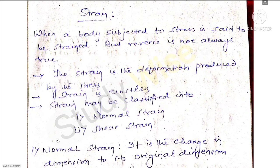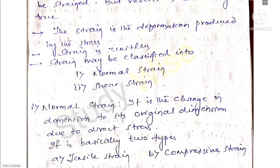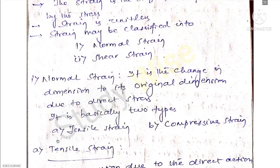Strain may be classified into normal strain and shear strain. Normal strain is a change in dimension relative to its original dimension due to direct stress. It is basically of two types: one is tensile strain and the other is compressive strain.